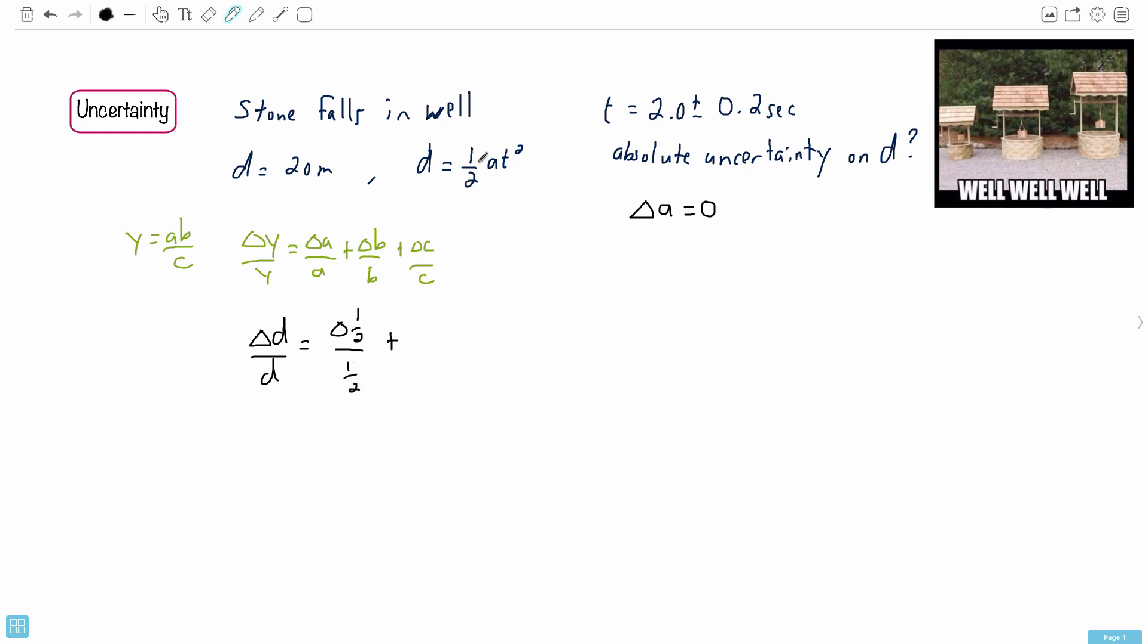You'll see that's ridiculous in a second. Plus delta A over A, plus - now remember that T squared is the same thing as T times T. So every one of these terms you have, you have to add a new fractional uncertainty. So we have delta T over T, plus another delta T over T. Now let's look at what makes sense.